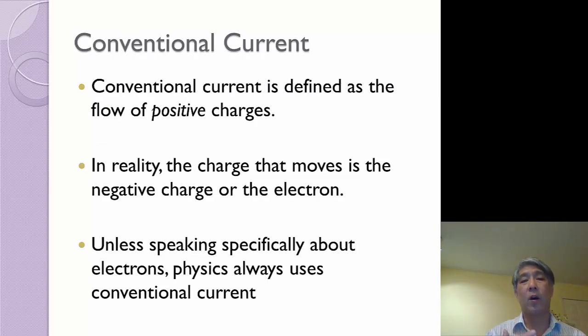So we have a thing called conventional current, and that's what we're always going to be using in this class. Unless I'm specifically asking about electrons, conventional current is defined as the flow of positive charges. In reality, we realize that the electron is the charge that moves, and an electron is negative. So we're imagining that instead of electrons flowing in one direction, the positive charges are actually flowing in the other direction.